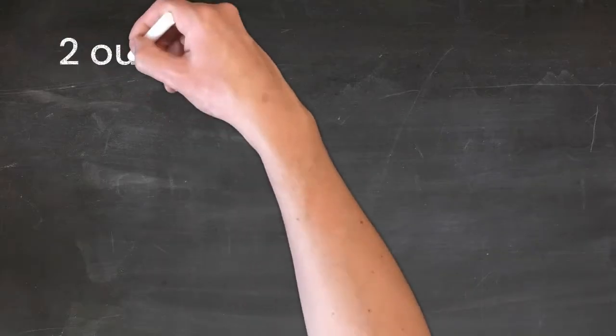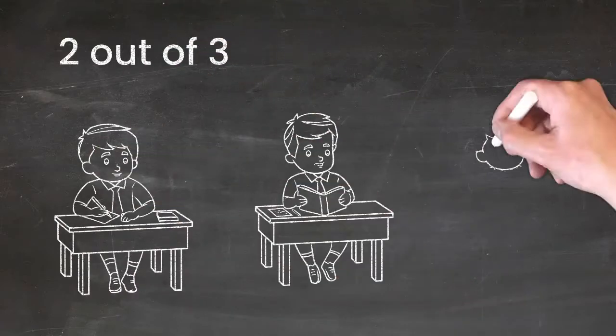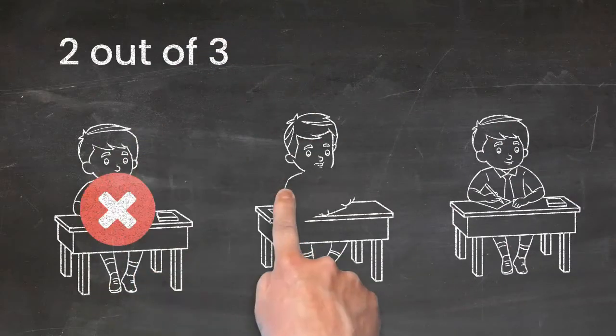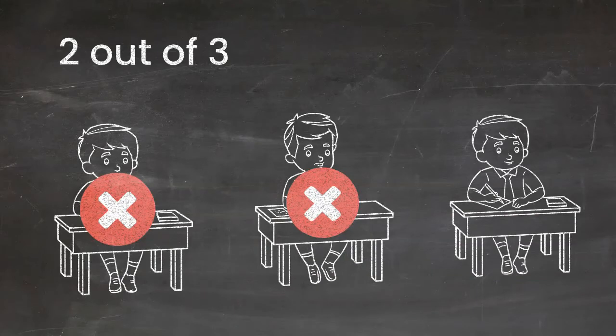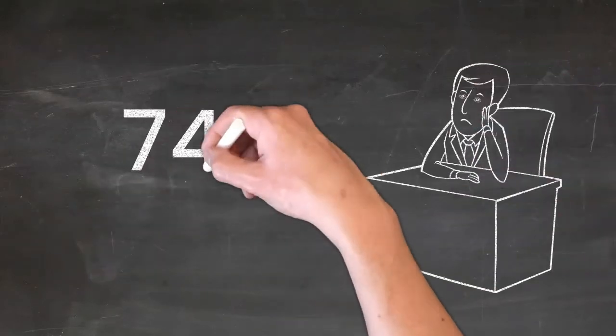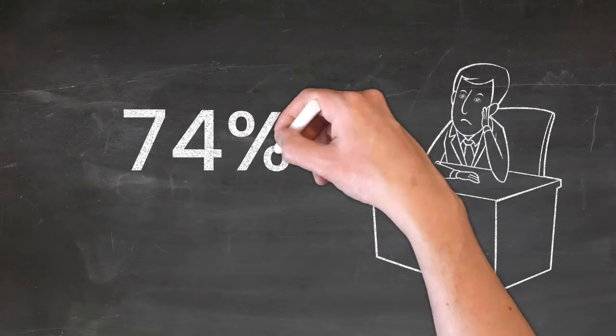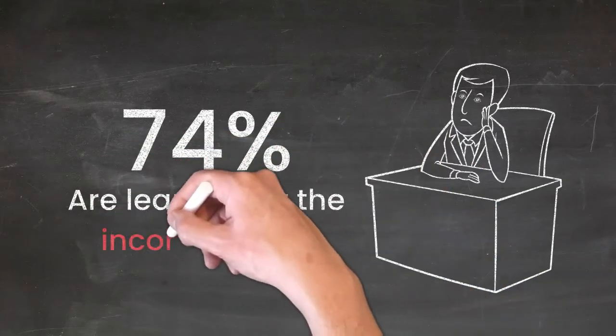We have found that 74% of students who are learning English are learning at the incorrect level. In our experience, 2 out of 3 students do not know their current English level.